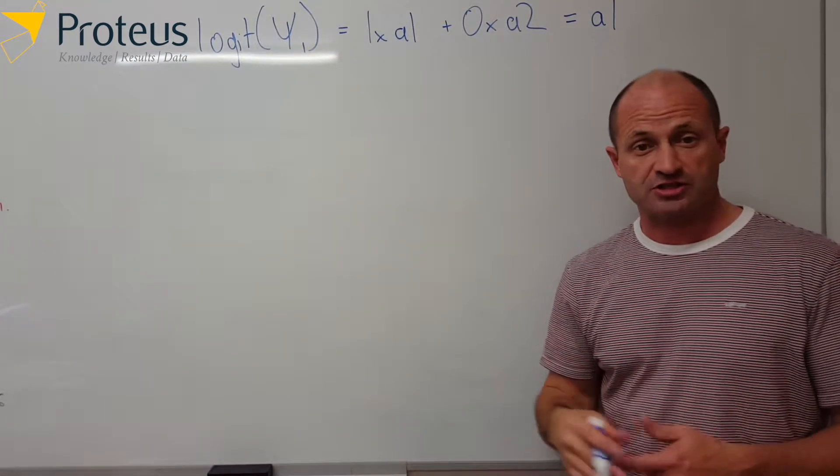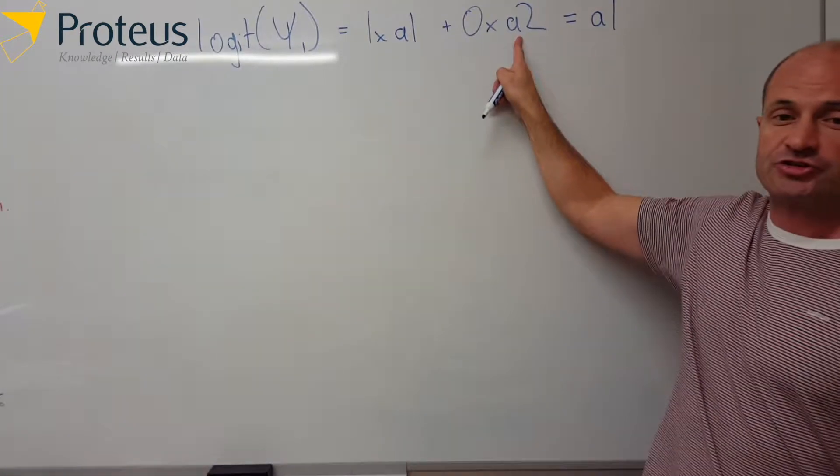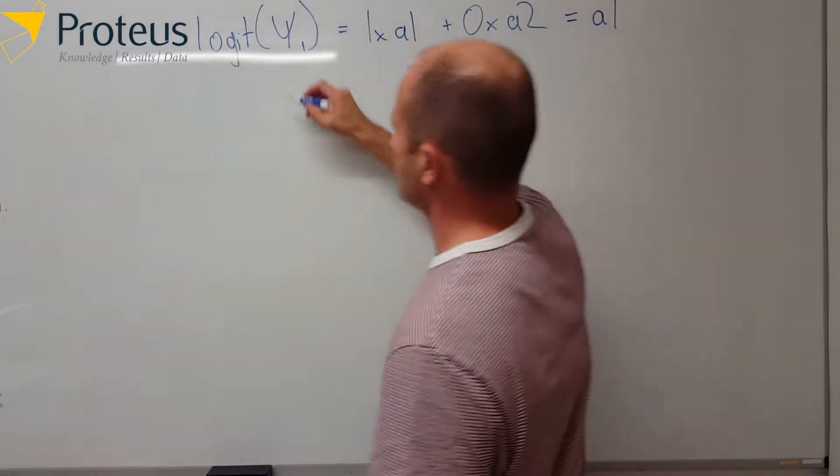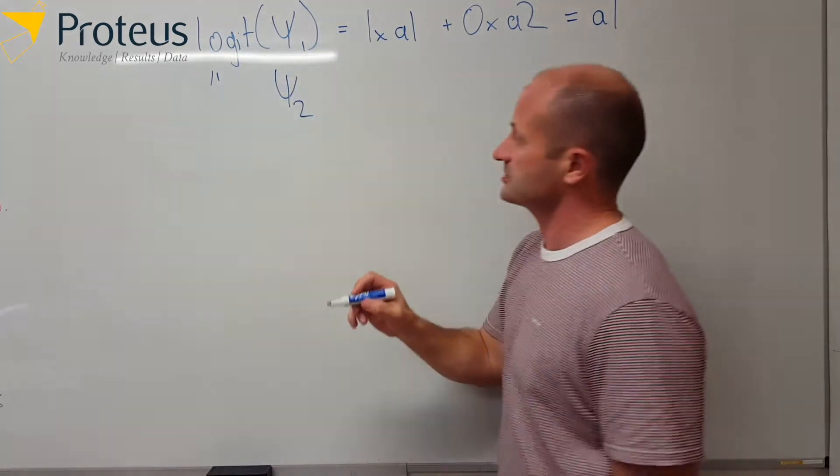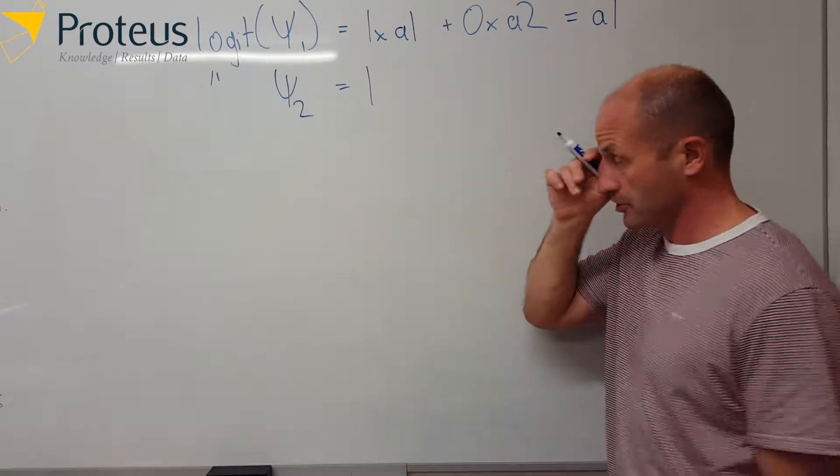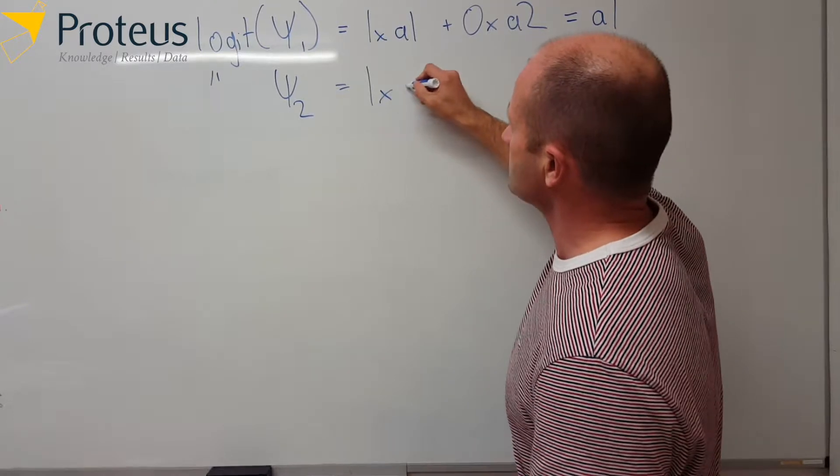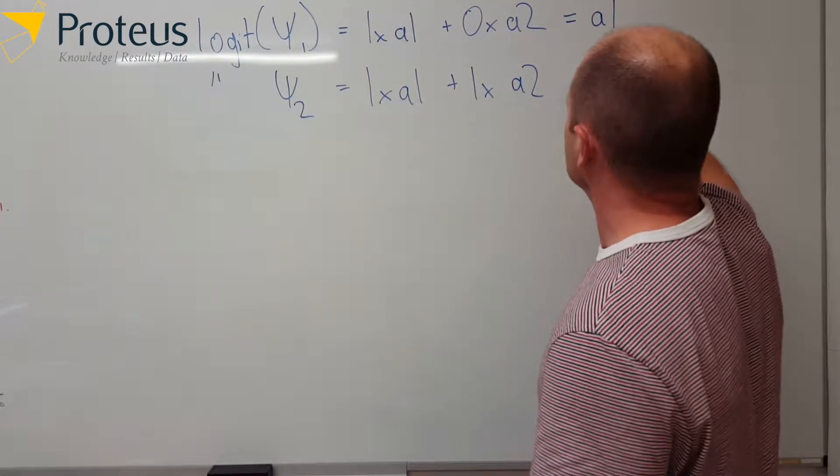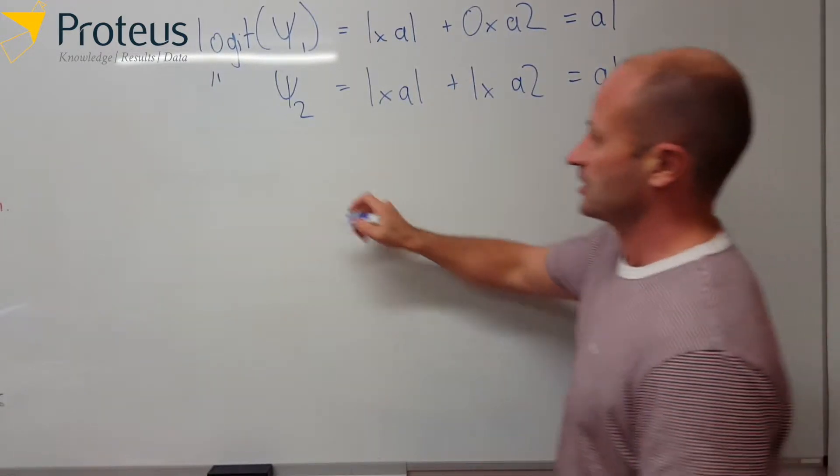As we go along the second row, because 1 times a1 is just a1 and 0 times a2 is zero, it just becomes a1. For time two, again it's on the logit scale. We're saying occupancy at time two on the logit scale is, again, go along each row and we multiply the values in the cells by the labels for each column. So 1 times a1 plus 1 times a2, so that's a1 plus a2.